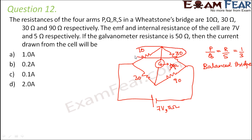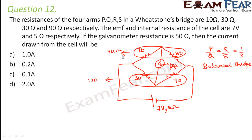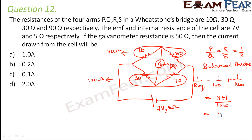The 10 ohm and 30 ohm resistances are in series, so they add up to 40 ohms. The 30 ohm and 90 ohm resistances are also in series, adding up to 120 ohms. These 40 ohms and 120 ohms are in parallel, so 1 by R equivalent equals 1 by 40 plus 1 by 120, which gives 4 by 120. Therefore R equivalent equals 30 ohms.